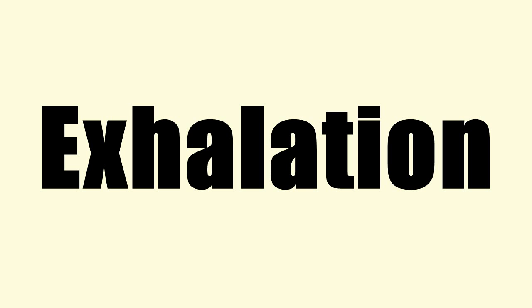Brain control of exhalation can be broken down into voluntary control and involuntary control. During voluntary exhalation, air is held in the lungs and released at a fixed rate. Examples of voluntary expiration include singing, speaking, exercising, playing an instrument, and voluntary hypopnea. Involuntary breathing includes metabolic and behavioral breathing.